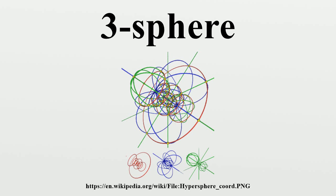The three-sphere is homeomorphic to the one-point compactification. In general, any topological space that is homeomorphic to the three-sphere is called a topological three-sphere. The homology groups of the three-sphere are as follows: H0 and H3 are both infinite cyclic, while Hi equals 0 for all other indices i. Any topological space with these homology groups is known as a homology three-sphere.